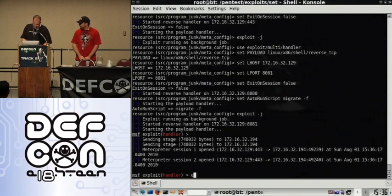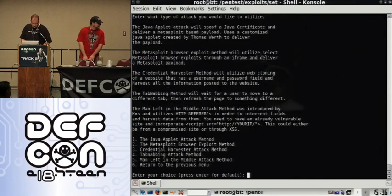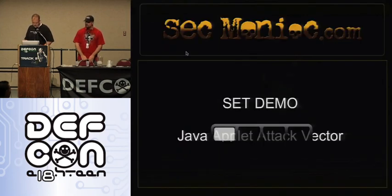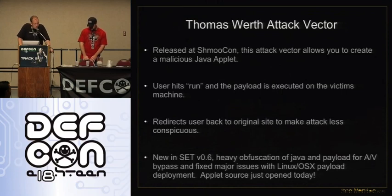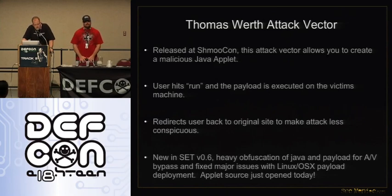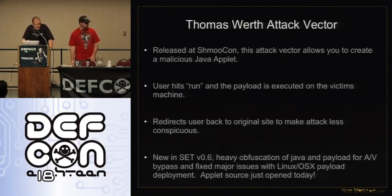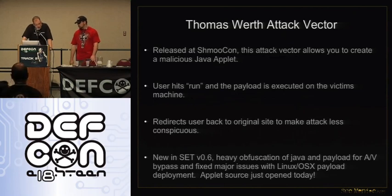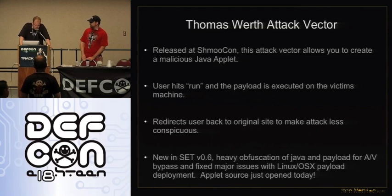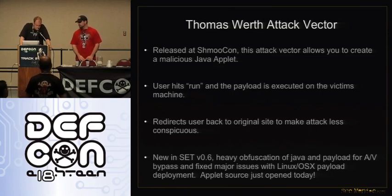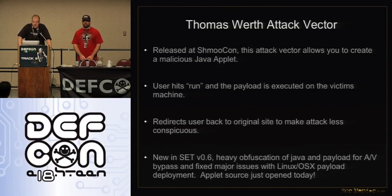The demo gods smiled upon us today. I have to give a shout out to Thomas Worth who wrote the Java applet attack vector. It was initially released at ShmooCon as closed source and heavily obfuscated, but we open sourced it with version 0.6, released at B-Sides on Wednesday. So you can actually manipulate the source code and use it however you want. Basically: user hits run, payload executes on the victim's machine, redirects back to the original site, making the attack less conspicuous.